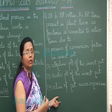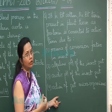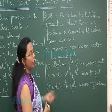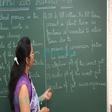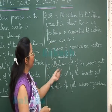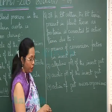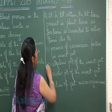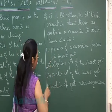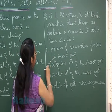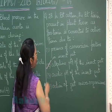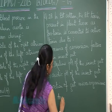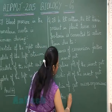The active toxin forms pores in the insect's gut and the insect dies. The conversion into active toxin is due to the alkaline pH of the insect gut. The correct choice is option 2, and hence the answer is 2.